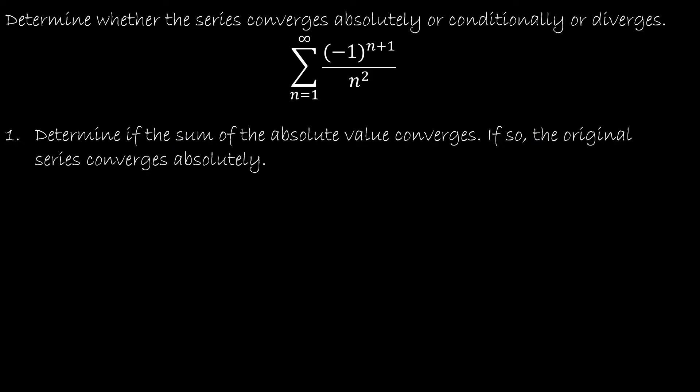Let's take a look at our first example. We want to see whether or not this series converges absolutely or conditionally, or if it diverges. We're going to take it step by step. For this one, we won't need to move on to a step two. The initial step is to determine if the sum of the absolute value converges, and if so, the original series will converge absolutely.